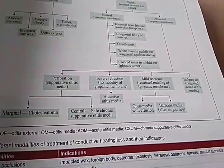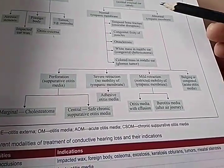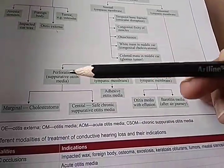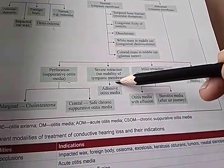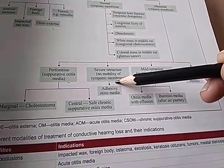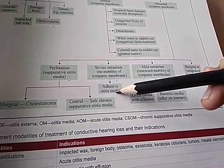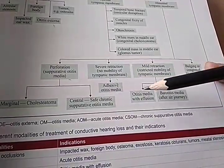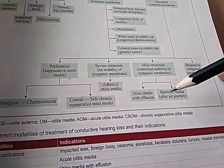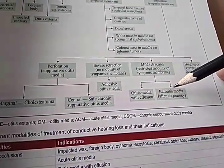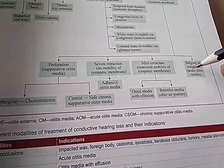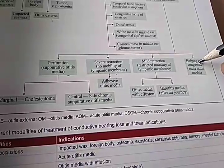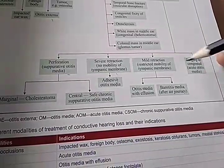If an abnormal tympanic membrane is present, it could be otitis media. No mobility of the tympanic membrane — again otitis media, barotitis media — again otitis media, different types.